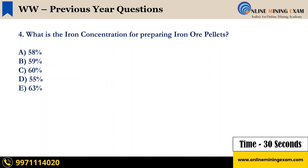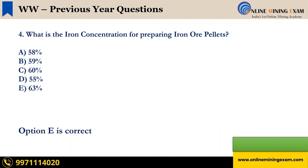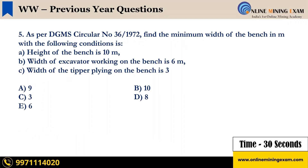Question 4: What is the iron concentration for preparing iron ore pellets? The correct answer is E — 63 percent.